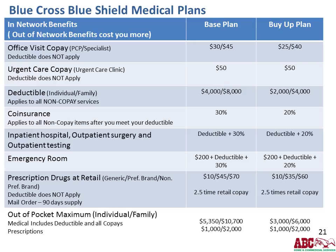On both plans, there is an out-of-pocket maximum for individual and family, broken down between medical and prescriptions. Your medical out-of-pocket includes your deductible, copayments, and coinsurance. On the base plan, the maximum is $5,350 for an individual and $10,700 for a family, with a separate prescription maximum of $1,000 individual/$2,000 family. On the buy-up plan, the medical out-of-pocket is $3,000 individual/$6,000 family, and prescriptions are still $1,000 individual/$2,000 family.